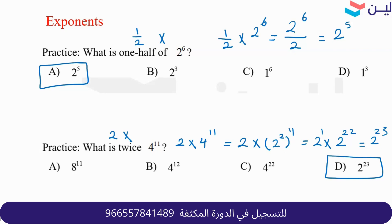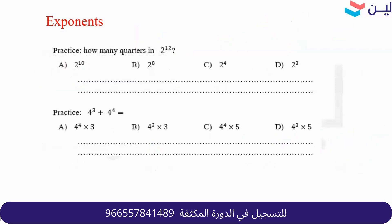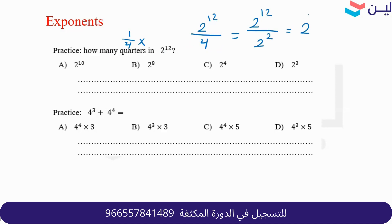All the rules are on page 18 at the top. Next: how many quarters are in 2 to the twelfth? Quarters means one-fourth, so divide by 4: 2 to the 12 over 4. Change 4 to 2 squared. Apply the division rule: 12 minus 2 equals 10. Answer is 2 to the tenth.